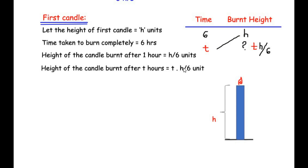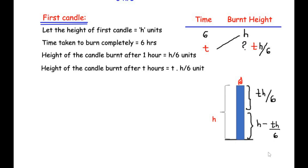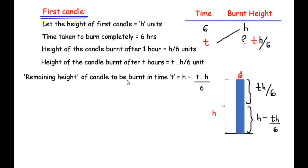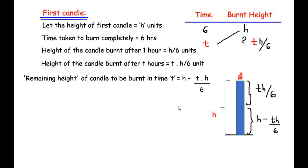The height burnt after t hours is th over six, so the remaining height is the total height minus the height already burnt: h minus t times h over six. The remaining height of the first candle after time t is h minus th over six. Let us consider this as equation one.